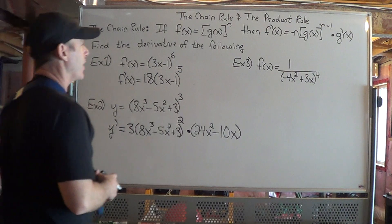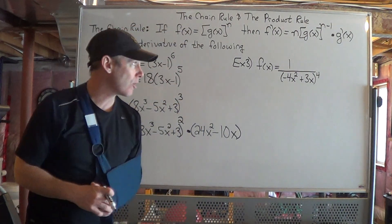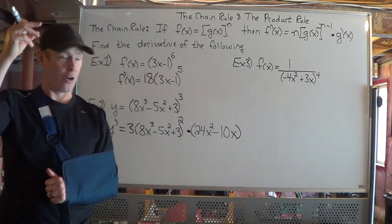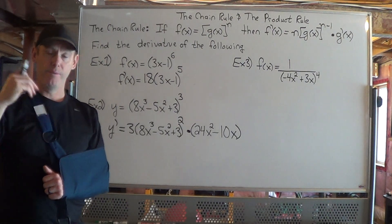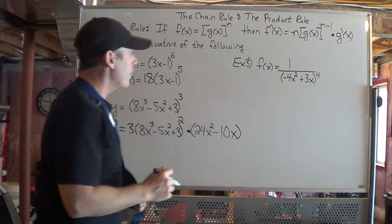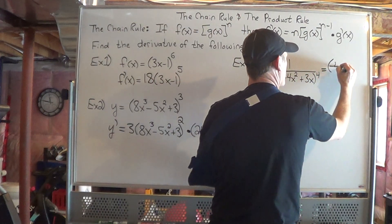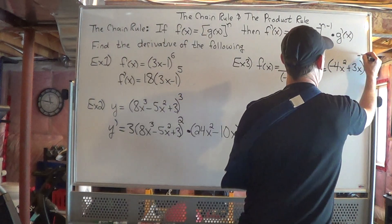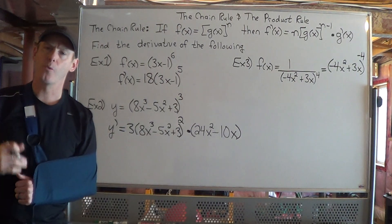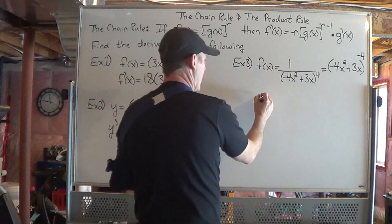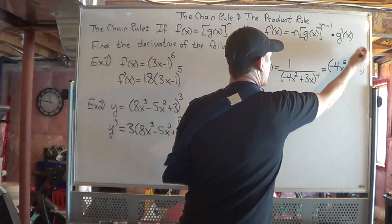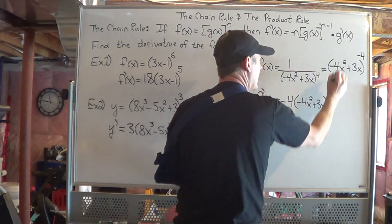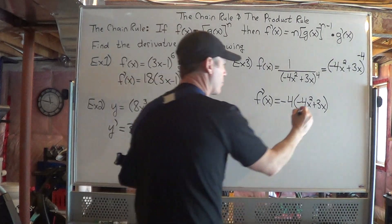Example 3 is a little different. We have f of x equal to 1 divided by negative 4x squared plus 3x, all to the power of 4. We can move things from the denominator to the numerator by changing the sign on the exponent. So I'm going to rewrite this function as negative 4x squared plus 3x to the power of negative 4. I just changed the way it looks so that I can use the chain rule.